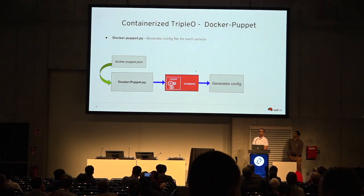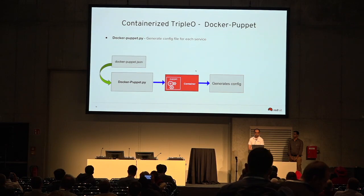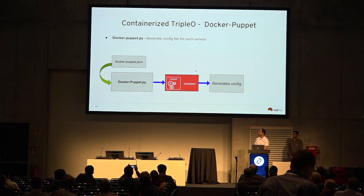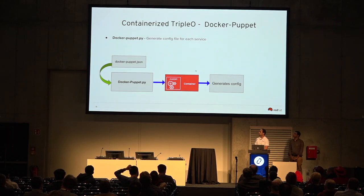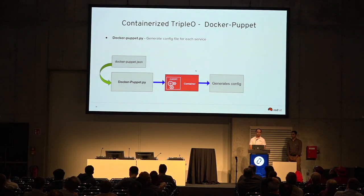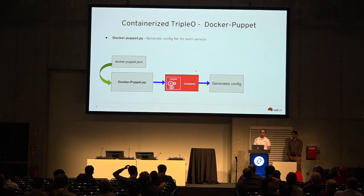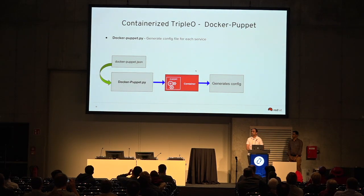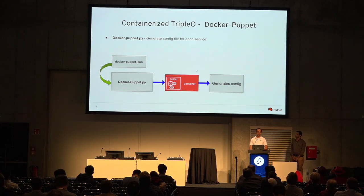Docker Puppet.py is responsible for generating the configuration for each of the services and running Puppet inside the container. It takes the Docker Puppet JSON as input and puts that into the container to generate the configuration. There are two config files: varlib config data with all services inside the container as a full config tree, and varlib Puppet generated which only contains files modified by Puppet. Finally, it generates a checksum which tells Paunch that the configuration has changed and to restart the container.